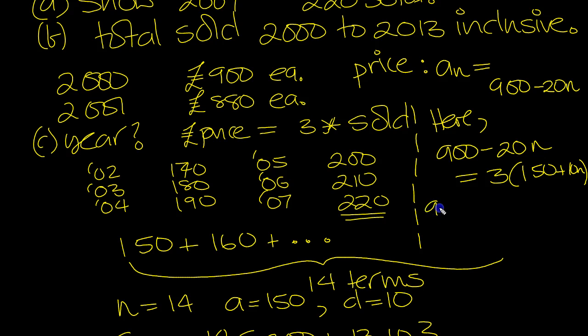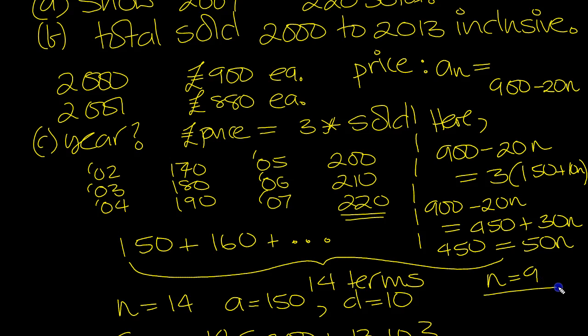So you've got 900 minus 20N is equal to 450 plus 30N. So 450, then move that over the equals, you get 450 is equal to, and then move the minus 20 through to get 50N. So N equals 9.